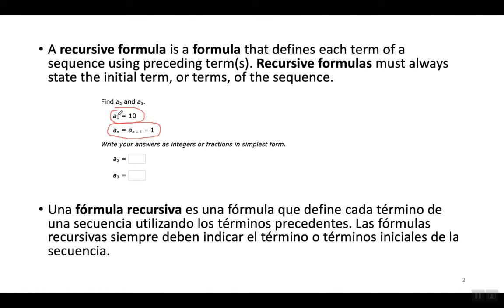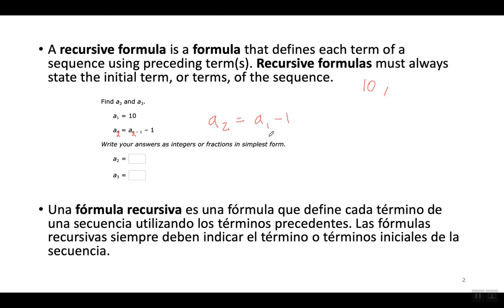El 1 quiere decir que este es el primer término en la secuencia. El primer término en la secuencia es el número 10. Nosotros tenemos que encontrar el segundo y tercer término en la secuencia. Para encontrar el segundo término voy a sustituir para la n el número 2, aquí y también aquí. Cuando yo simplifico el 2 menos 1, la fórmula me va a decir que el segundo término es igual al primer término menos 1. Y el primer término nos dice aquí que es 10. 10 menos 1 nos da 9.